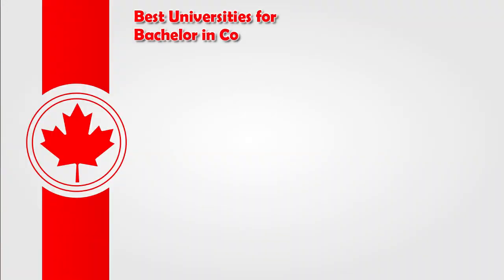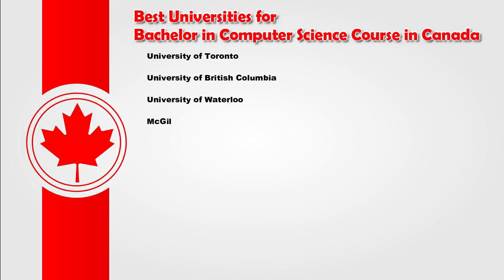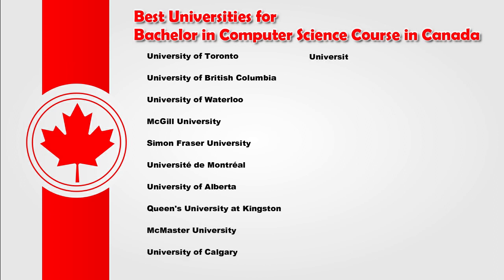Now if we talk about the best universities for Bachelors in Computer Science in Canada: first is the University of Toronto, then University of British Columbia, University of Waterloo, McGill University, Simon Fraser University, University of Montreal, University of Alberta, Queen's University at Kingston, McMaster University, University of Calgary, and University of Victoria.